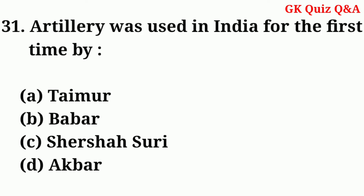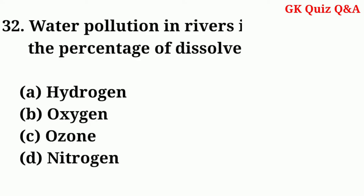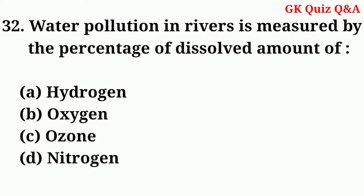Artillery was used in India for the first time by — Answer: B — Babur. Water pollution in rivers is measured by the percentage of dissolved amount of — Answer: B — Oxygen.